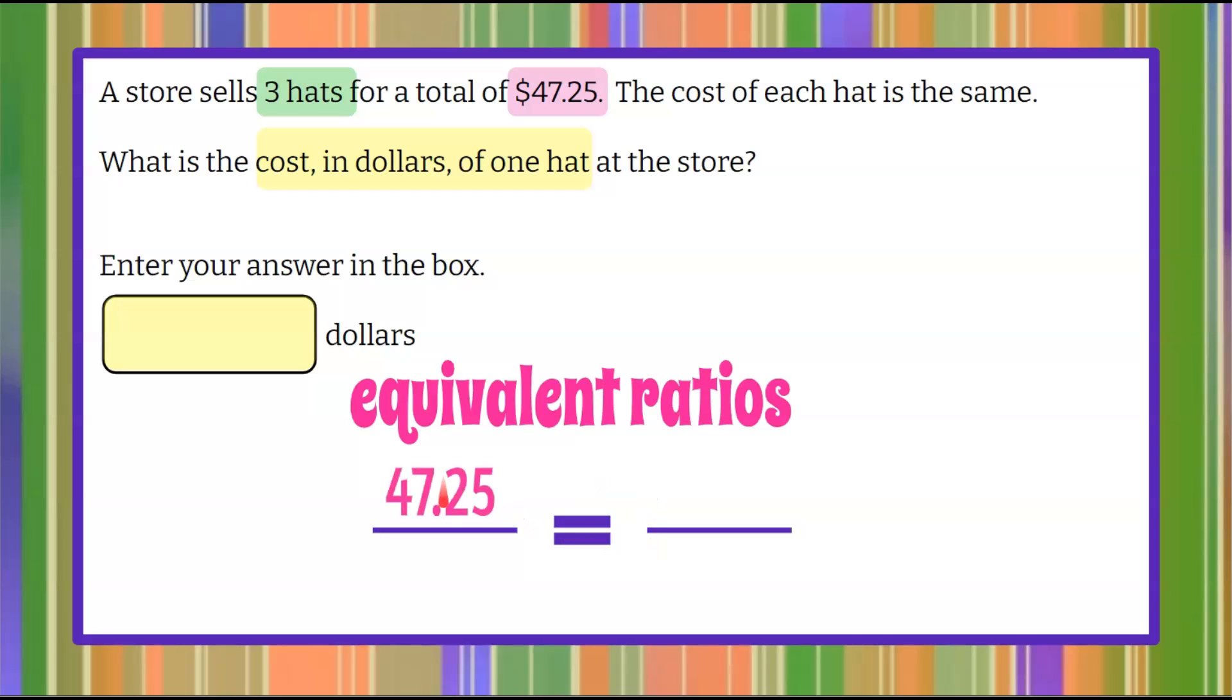So we know that $47.25 is for three hats, and now we want to determine how much for one. So we want to find that cost for one hat. So we're going to change our denominator from three to one.